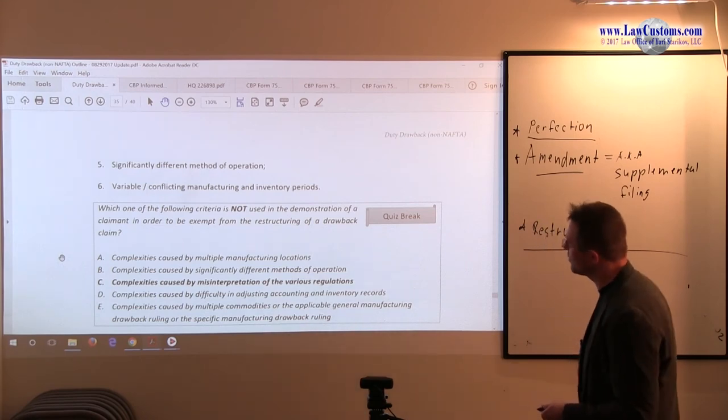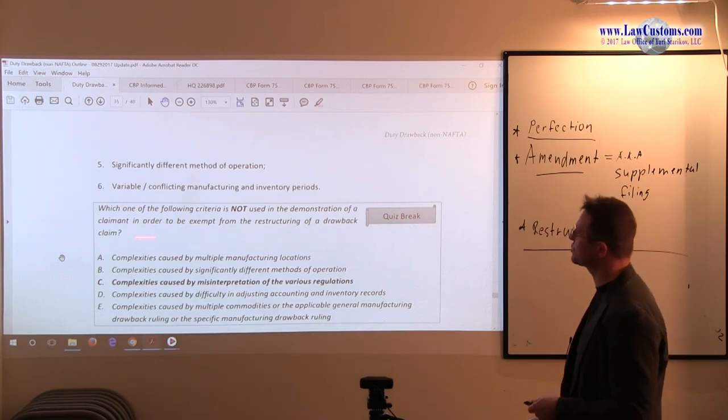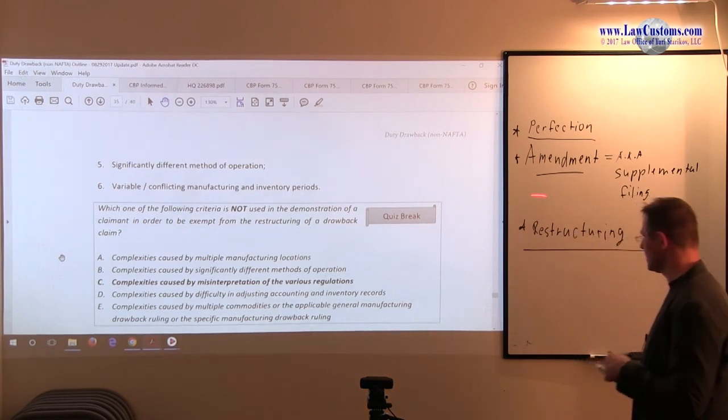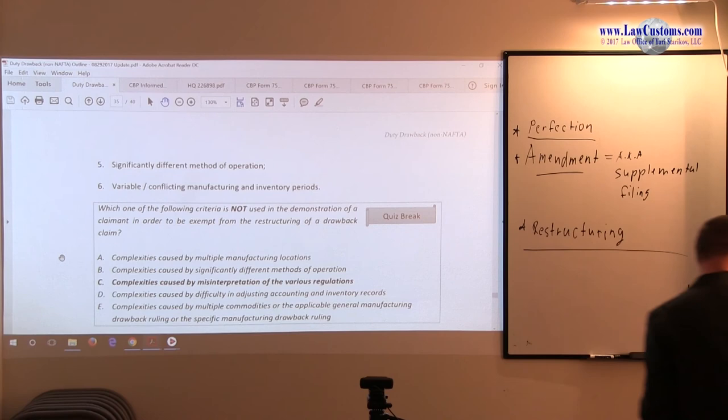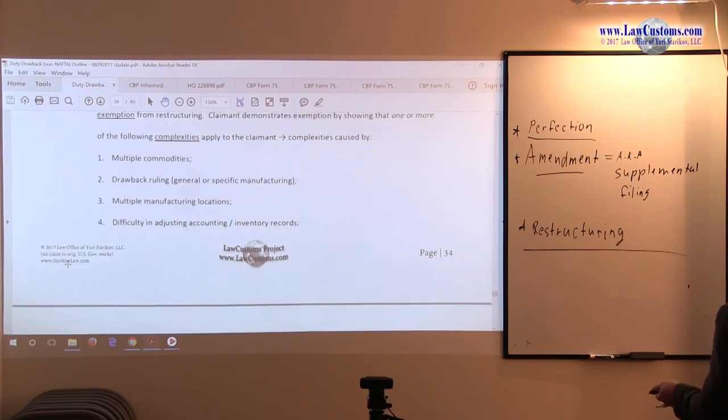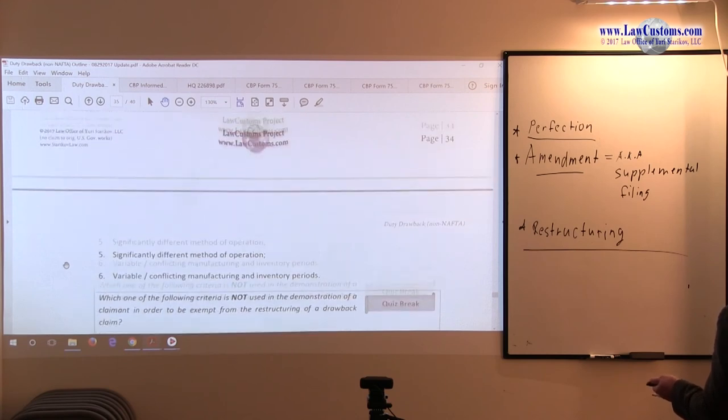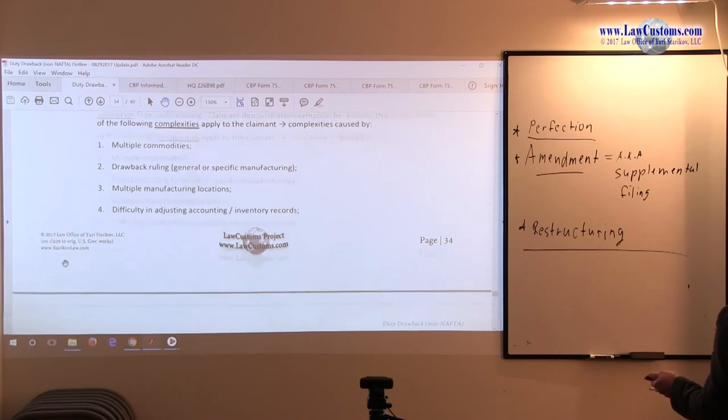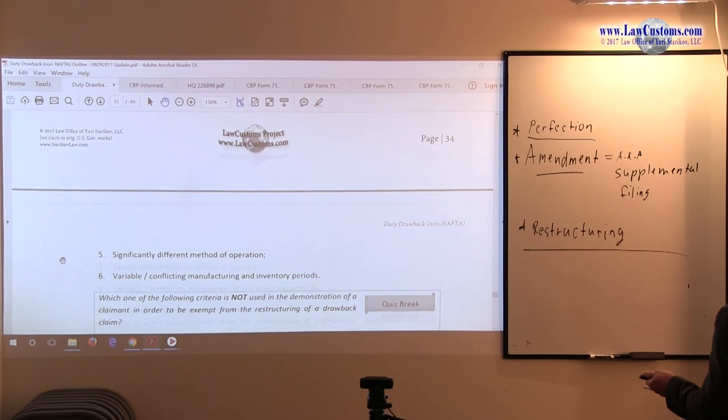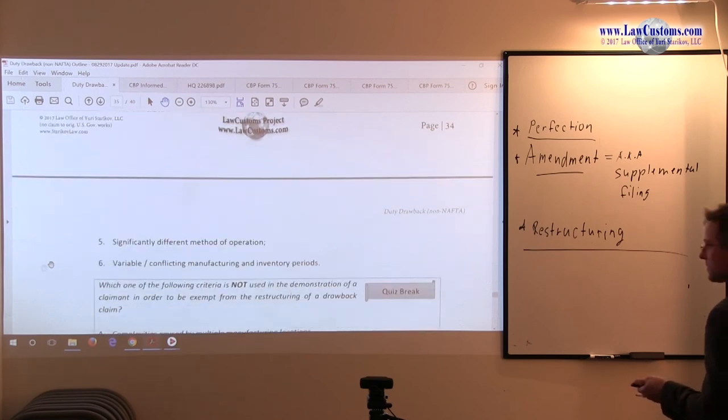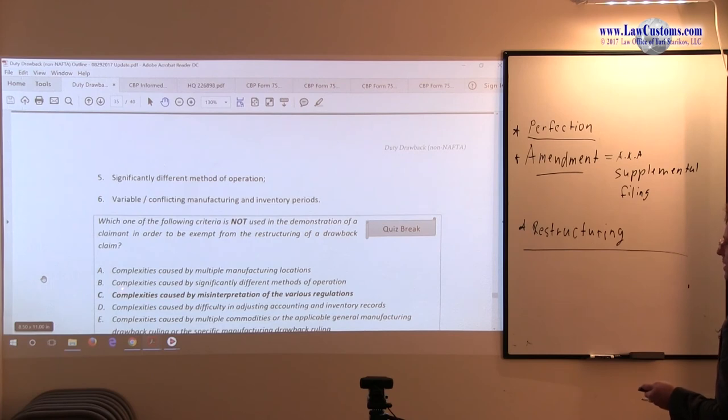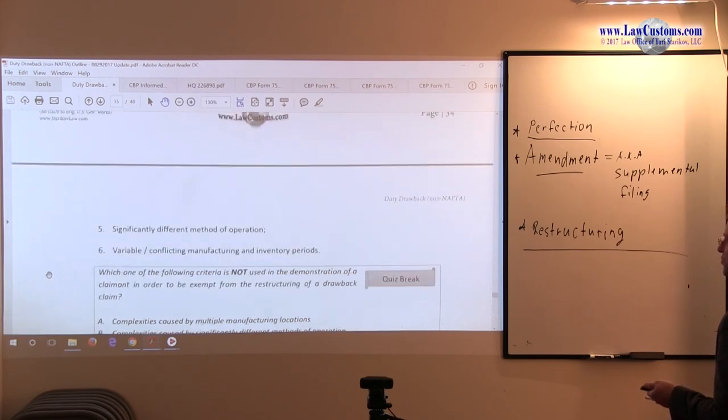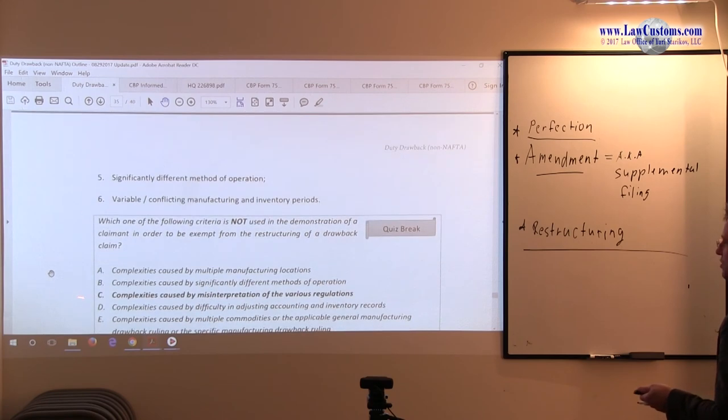Alright, so let's take a look at how this is being tested. As you notice, once you have a laundry list of items, whether on the exception side or whether on the factor side, customs is likely to test you by asking you which one is not, and I give you all the ones that are. And you have to pick out the one that doesn't fit one of those line item criteria. So the question goes like this: Which one of the following criteria is not used in demonstration of a claimant order to exempt from restructuring of drawback? So customs comes back with restructuring, the claimant must think of some exception criteria. So we look at the exception list and we just mix and match. The first answer deals with complexities caused by multiple manufacturing locations. So we have locations here, this fits one of the criteria. So B, we are looking for the one that's not. B is the reason, so we move on.